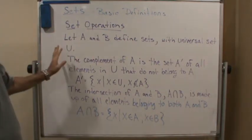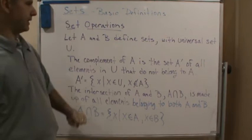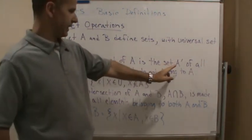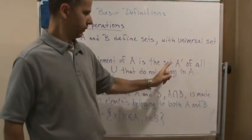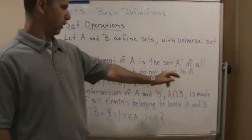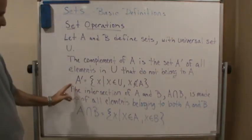So we're going to let A and B define sets with a universal set U. The complement of A is the set A prime of all elements in U that do not belong to A. And this is the way we mathematically write it.